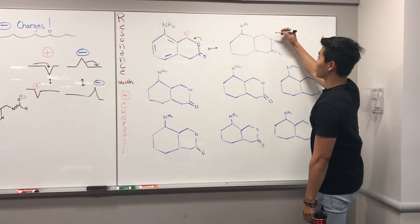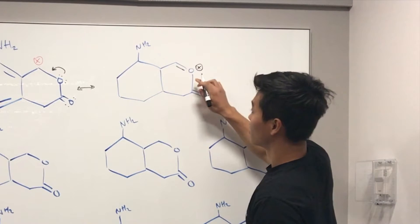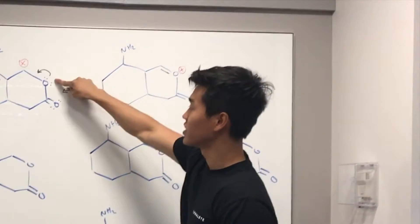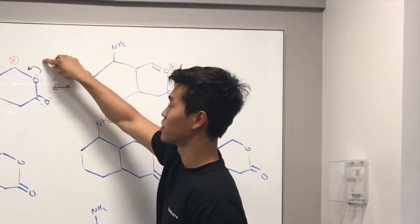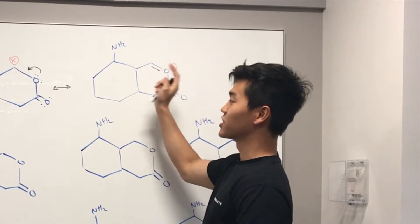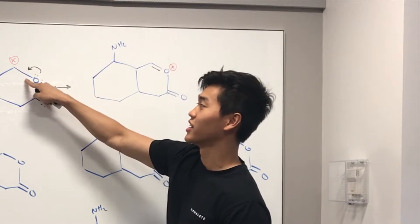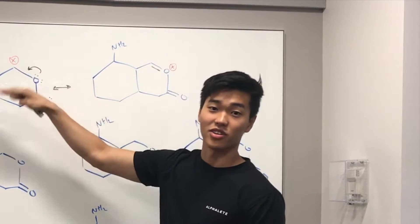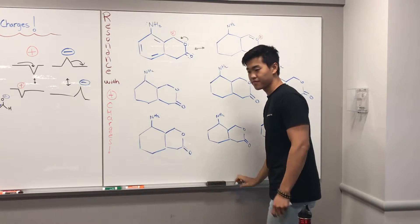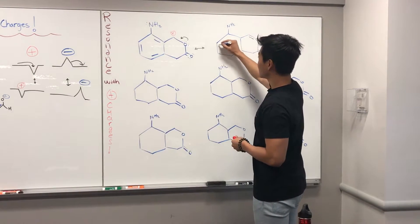Bringing the lone pair over gives us a new bond here, and a positive charge on our oxygen. We bring this lone pair to the bond to fill in the positive charge — just note that you're not bringing the lone pair all the way to the charge, you're bringing it to the bond adjacent to it.